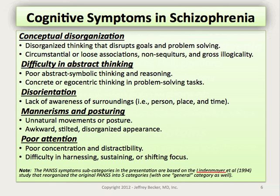Regarding the cognitive symptoms of schizophrenia, conceptual disorganization is common with disorganized thinking that disrupts goals and problem solving. Circumstantial or loose associations are seen commonly, with over-ascribing meaning between events that may be coincidental. Difficulties in abstract thinking are common with poor problem solving and symbolic reasoning. Disorientation to person, place, and time is sometimes present. There can be mannerisms and posturing with an awkward and stilted disorganized appearance, and poor attention with concentration and distractibility issues that make it difficult to sustain and shift focus.